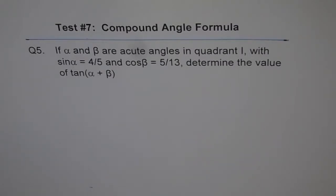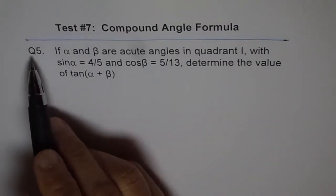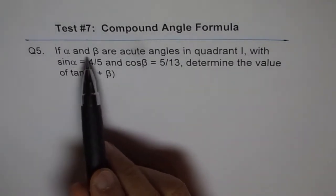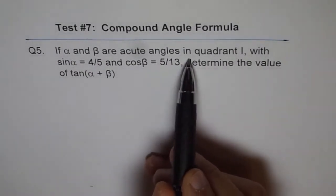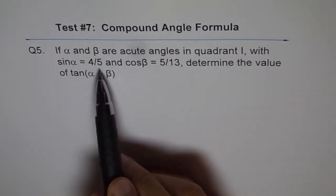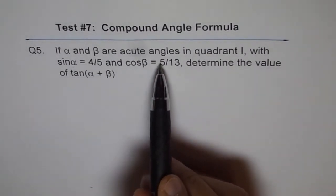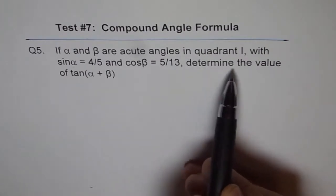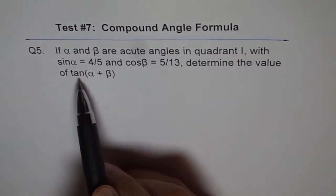Here is my solution. Question 5. If α and β are acute angles in quadrant 1, with sin α equals 4 over 5 and cos β equals 5 over 13, determine the value of tan(α + β).